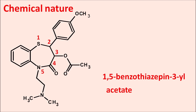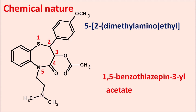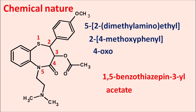The other side chains: the fifth position has a dimethylamino ethyl side chain — 5-(2-dimethylaminoethyl). The second position has a phenyl group with a para-methoxy group — 2-(4-methoxyphenyl). The fourth position has a keto group — 4-oxo. And there is unsaturation at the 2,3-position — 2,3-dihydro. That is the complete name of Diltiazem.